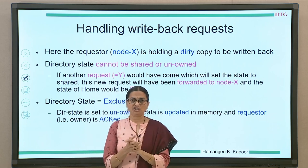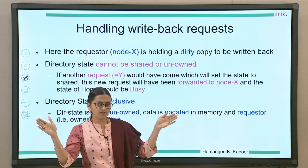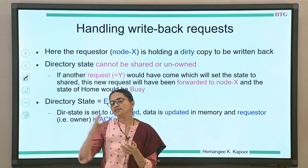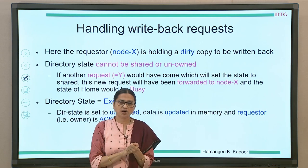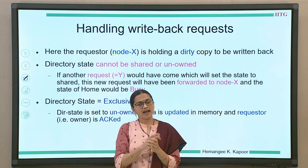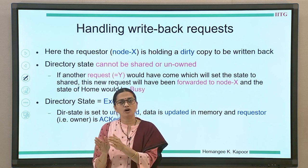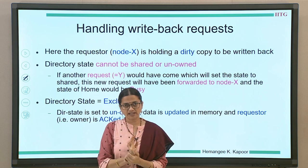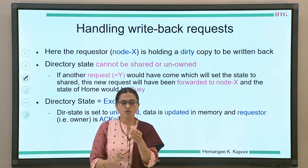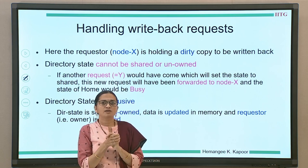But this particular action can have some race conditions which we need to take care of. If a write back is going to the directory and in the meanwhile there is another processor which has sent a request for the same block to the directory node, these two messages are happening together in the network. When a request comes to the directory and there is a dirty copy in the system, the directory forwards that request to the node having the dirty copy. This node has to send the data block to the new requester and also reply back to the home directory. In the current scenario, the owner — the node having the dirty copy — is already deleting the data block, has evicted it from its cache, and the data block is on its way to the home node. In the meanwhile, somebody else has gone to the home node asking for the same data block, and home would have forwarded the intervention to the dirty node. So these messages have crossed each other in the network.